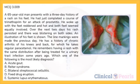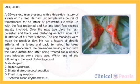Last question: a 65-year-old man presents with a three-day history of a rash on his feet. He had just completed a course of trimethoprim for an attack of prostatitis. He woke with his feet reddened and hot, both feet equally involved. Over the next two days the rash persisted with blistering on both sides. He has chronic arthritis of his knees and back for which he takes regular paracetamol. He recalls having a rash with the same distribution after being treated for a urinary tract infection some years ago. Which is the most likely diagnosis? A: acute gout. B: Reiter syndrome. C: bilateral streptococcal cellulitis. D: fixed drug eruption. E: systemic lupus erythematosus.